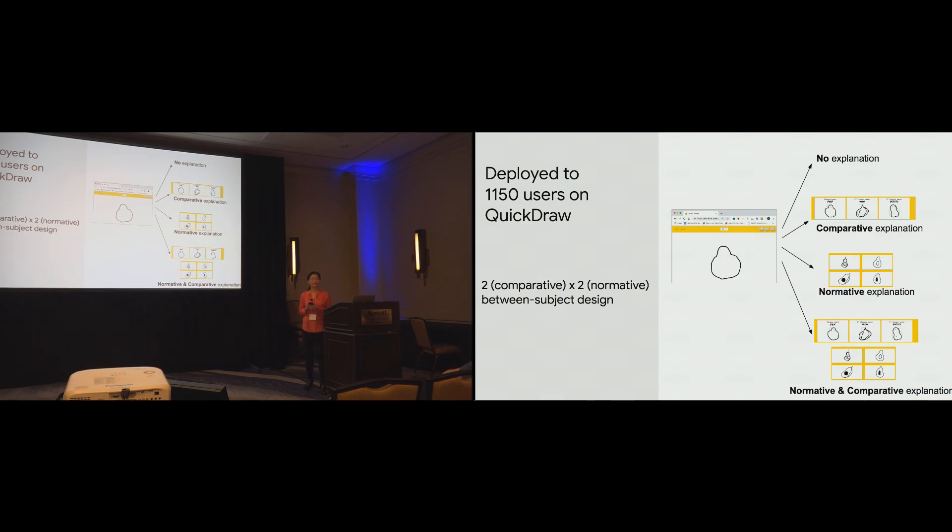So, to do so, we deployed these explanations to about a thousand users on Quickdraw. And we used a two-by-two between-subject study design. Two-by-two meaning that the comparative explanations were either on or off, and the normative explanations were also either on or off. So, let's say you're one of the people in the study, you drew an avocado, you see what the result was, and then you're randomly assigned to one of these four conditions. So, you either see no explanation, a comparative explanation, a normative explanation, or both explanations combined.